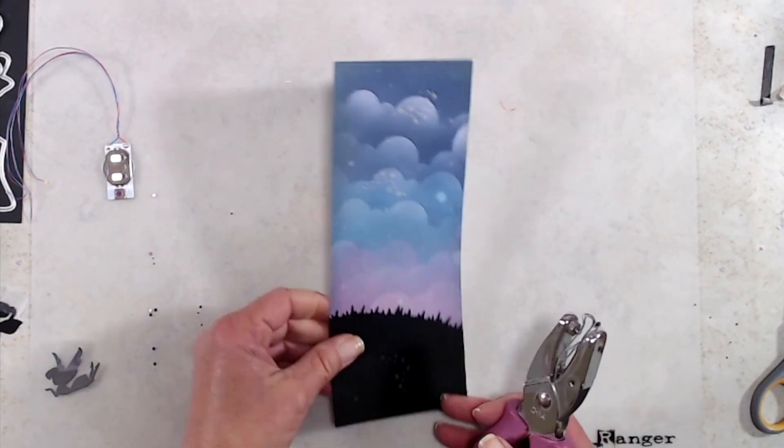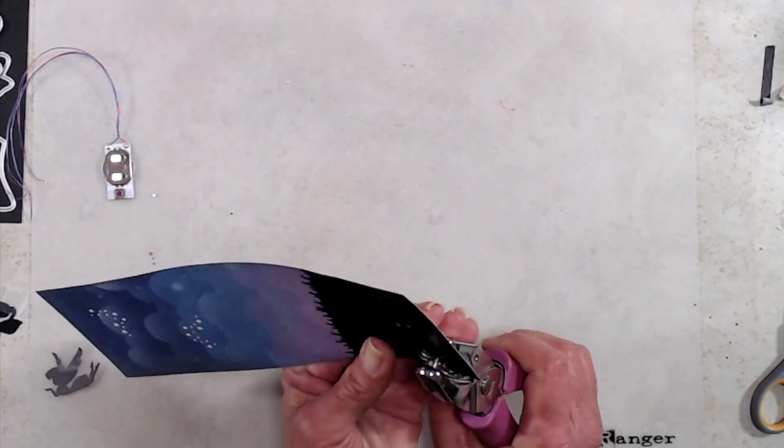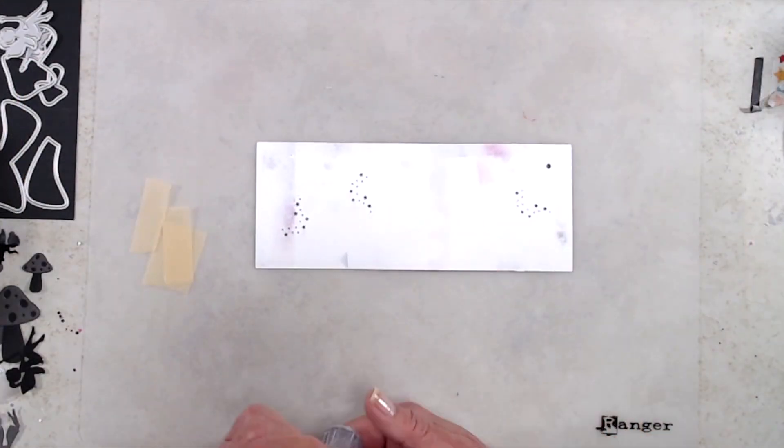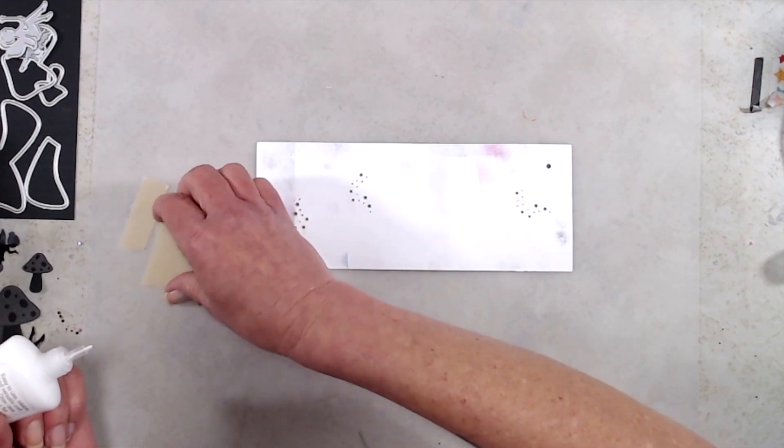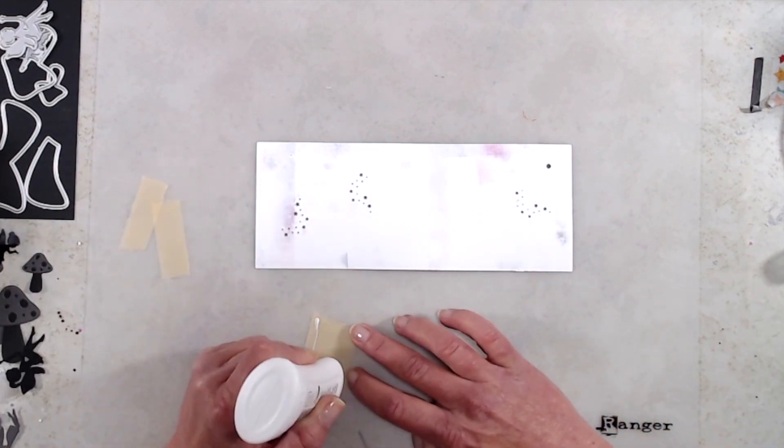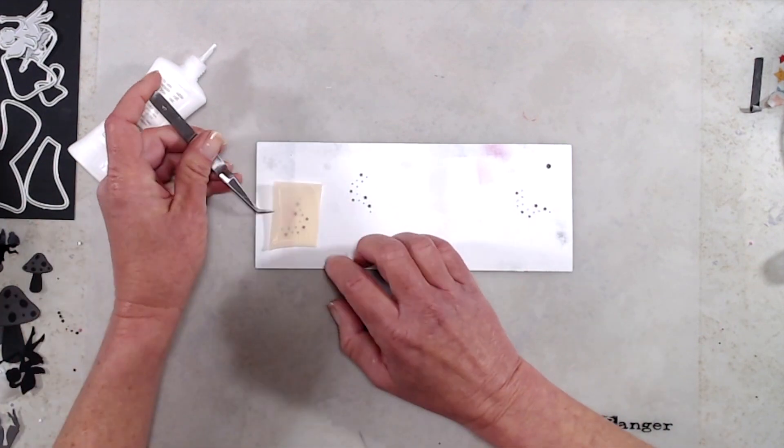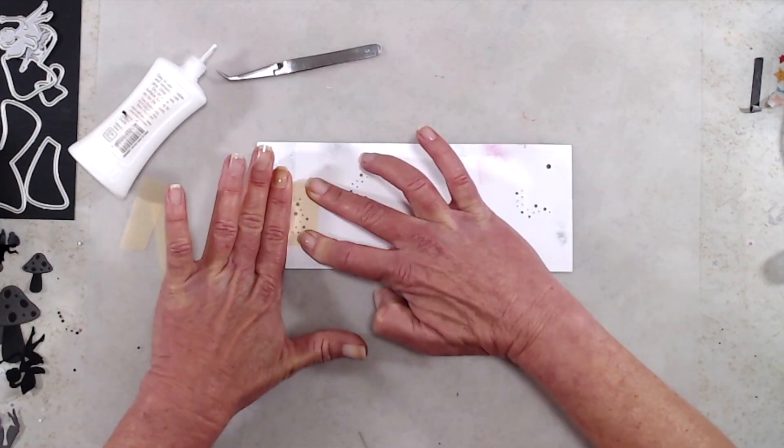I adhered some yellow vellum and what that's going to do is diffuse the light a little bit so that all of the fairy dust is lit up. If you don't have yellow vellum in your stash you can color a piece of regular vellum with a Copic marker or an alcohol-based marker.